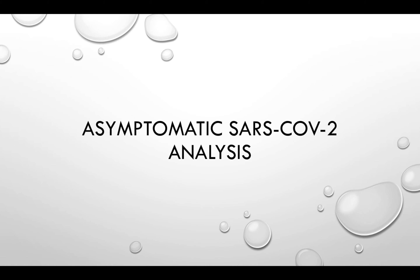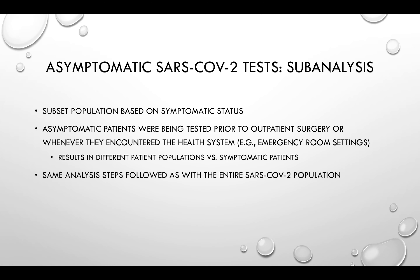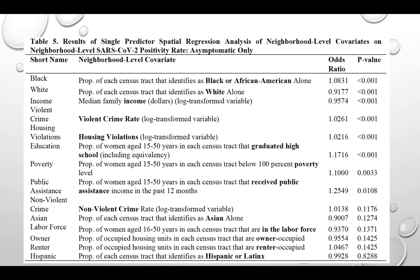We then looked at asymptomatic SARS-CoV-2 positivity as a subset. Asymptomatic patients are tested prior to outpatient surgery or whenever they encounter the health system — for example, when going to an emergency room during COVID. These results differ because people walking into an emergency room or receiving outpatient surgeries are a different population than patients coming in specifically for SARS-CoV-2 tests. We performed the exact same analysis steps in this subpopulation, which is much smaller in size.